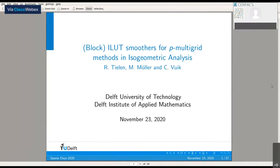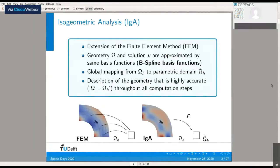Before I say more about these LUT smoothers and P-multigrid methods, let me start with a basic introduction to isogeometric analysis. Isogeometric analysis, or IGA, can be considered as an extension of the finite element method, which means the solution procedure is based on a variational formulation.